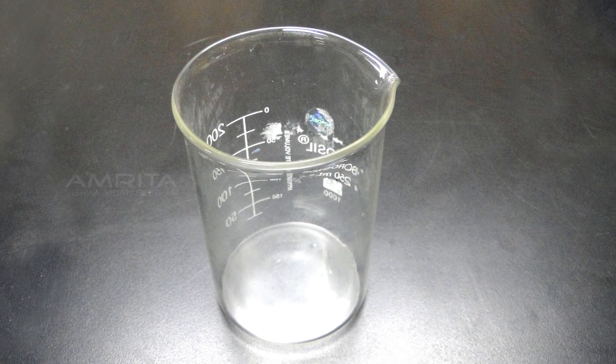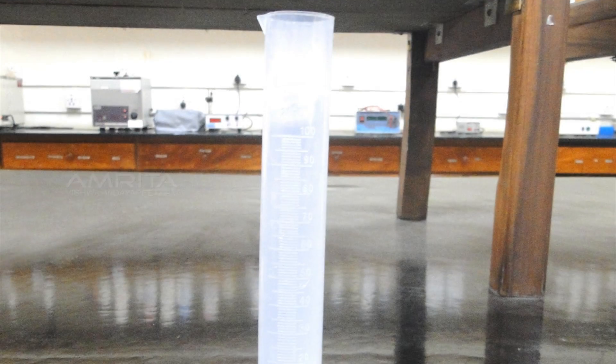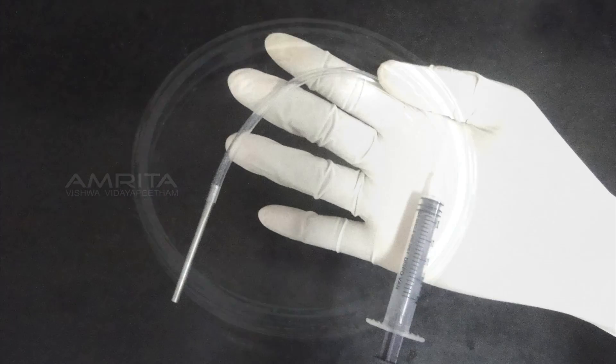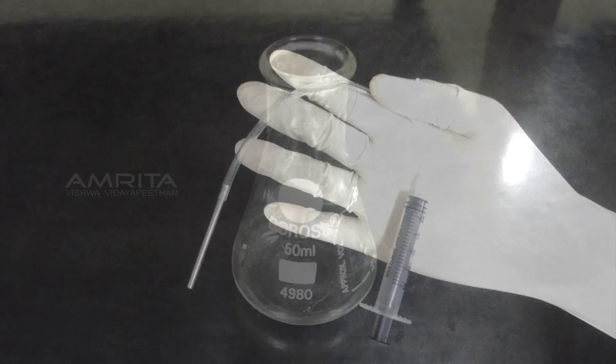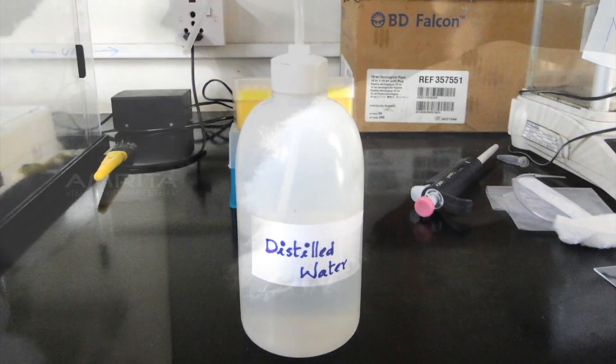Additional materials: beaker, 0.5 mL vials, measuring cylinder, petri plate, gel punch with syringe, conical flask, distilled water, and cotton.